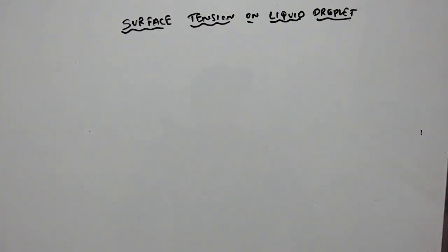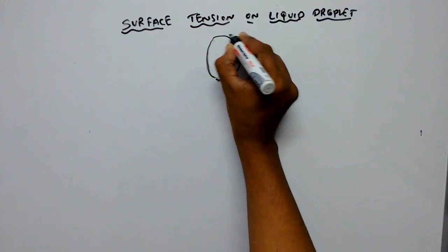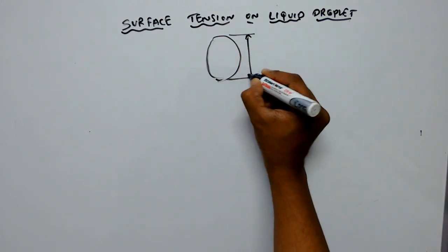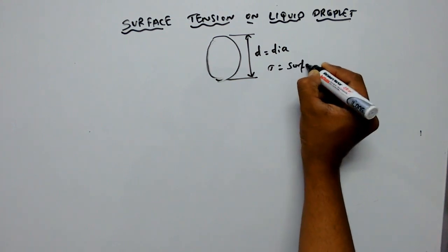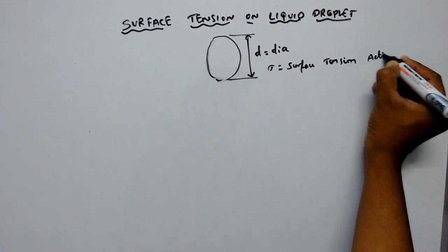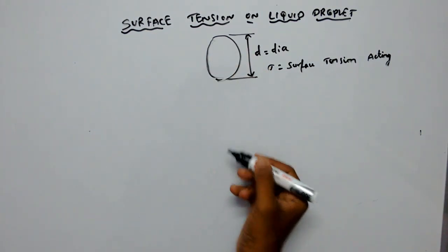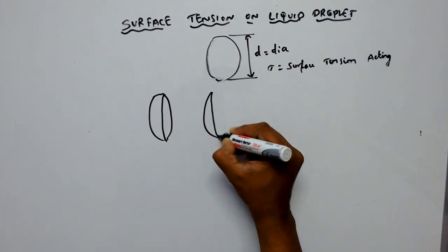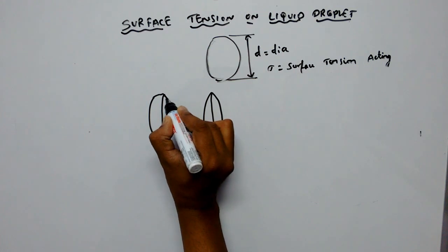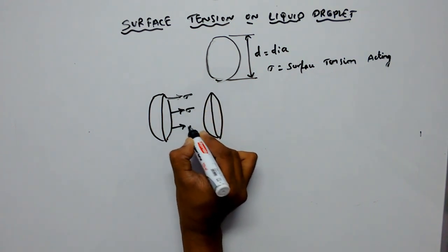The spherical shape is because of the surface tension developed. Let us consider a spherical droplet whose radius is small r, or the diameter is small d, and let Sigma be the surface tension acting on the surface of the liquid. If you cut this spherical droplet into two equal halves like this, the surface tension is developed at the surface in this direction.